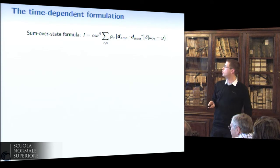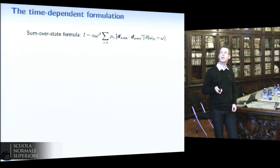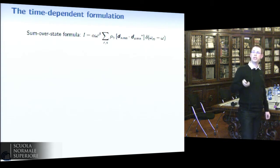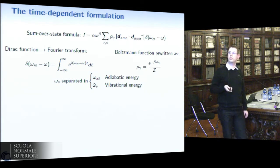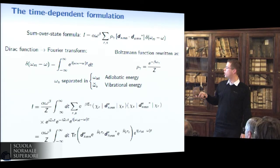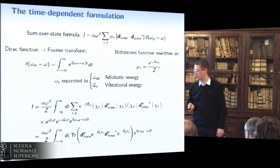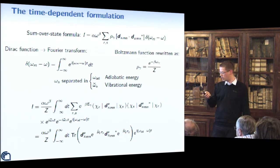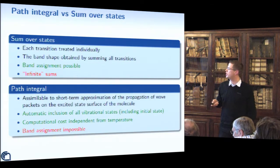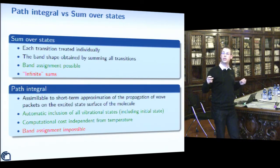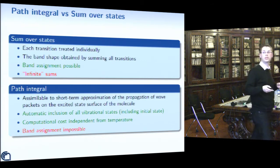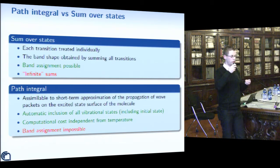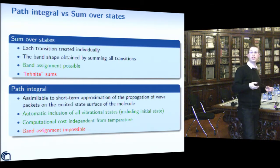More recently, in the work of Alberto Bayardi, we developed a time-dependent formulation of our sum-over-states approach. The correlation function is rewritten as a Fourier transform so that we can write the intensity as a Fourier transform of the trace of the property. An advantage of this method is that we can have an automatic inclusion of all vibrational states, while in the sum-over-states case we have an infinite sum and must empirically decide when to truncate the summation.